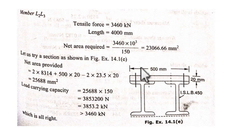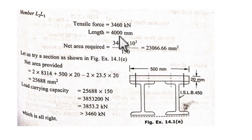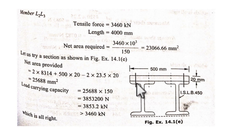As you can see, if you can design one member, the others follow the same approach. You should know the concept. Here we have explained using the WSM method, but you can also use the limit state method. The key is knowing the design forces in each member. This completes the entire design of the truss bridge members. Thank you.